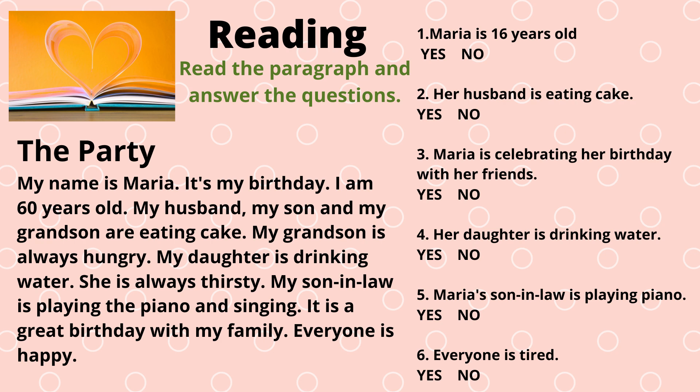Before we look at the questions, I'd like you to look at a couple of words that you may not understand and help you figure out what that word might mean. The first word is hungry. It says my grandson is eating — hungry. Can you figure out that the word hungry means wanting to eat? Then we have the word thirsty. The word thirsty comes in the sentence after the daughter who is drinking. Thirsty is wanting to drink.